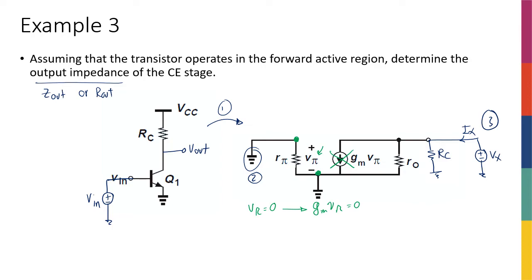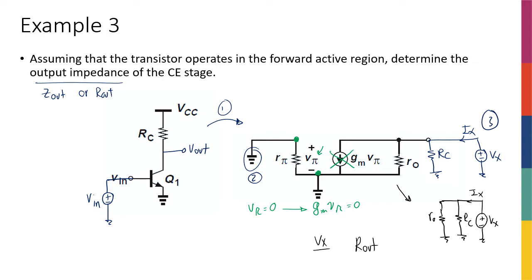The circuit becomes very simple — it simplifies to: VX, with IX flowing through it, an RC to ground, and R0 to ground, because the emitter is ground so R0 is also connected to ground. I don't really need to write the KVL for you to see that Rout — the Thevenin equivalent resistance, or VX over IX — is just RC in parallel with R0. So the output impedance looking into the collector of a common emitter gain stage is RC in parallel with R0.